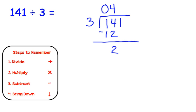And our last step is to bring down, so we need to bring down that 1. Now we start over again. Divide. So 21 divided by 3. And we know 3 times 7 is 21. So now we multiply. 3 times 7 is 21. And our third step, we will subtract. 21 minus 21 is 0. Now there's no numbers left to bring down. So we have solved this problem. 141 divided by 3 equals 47, and there is no remainder.